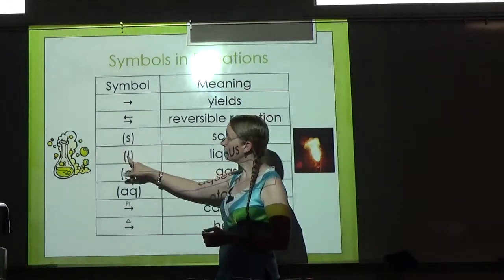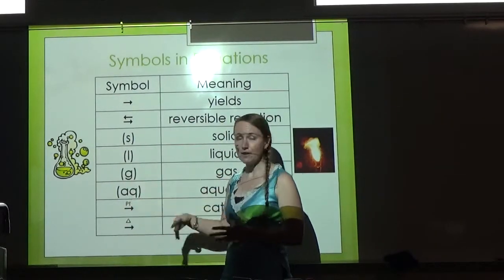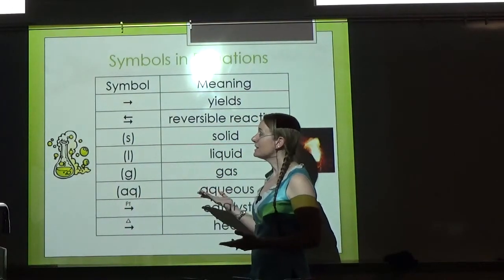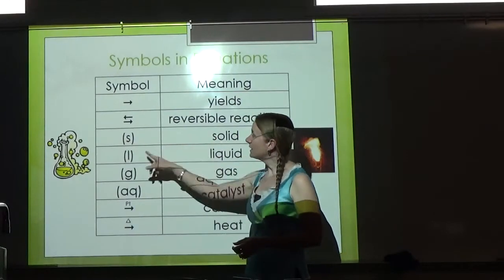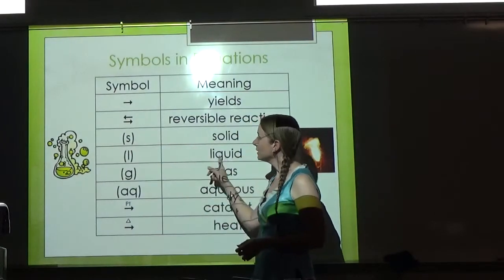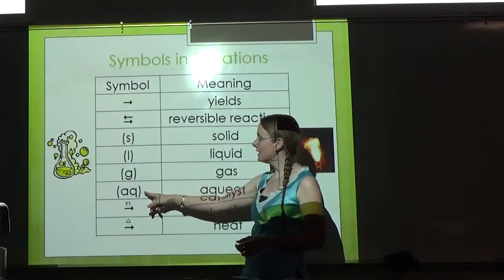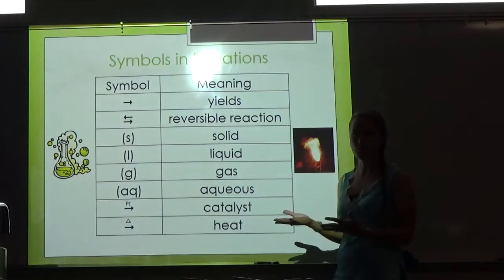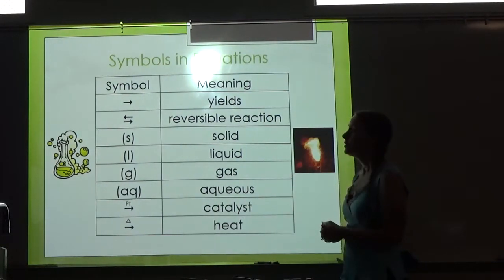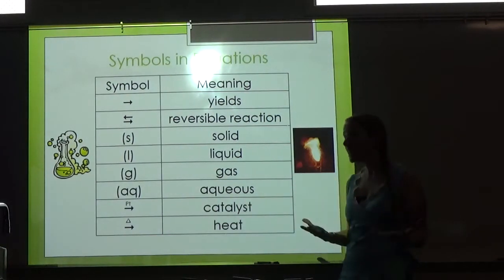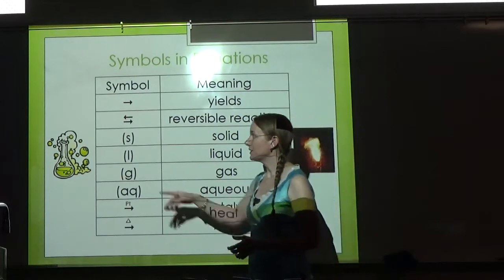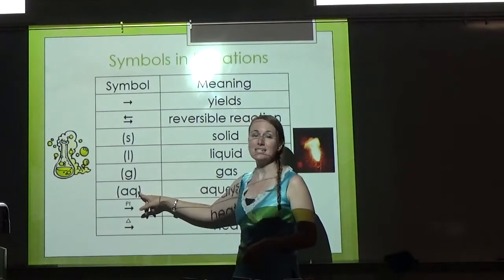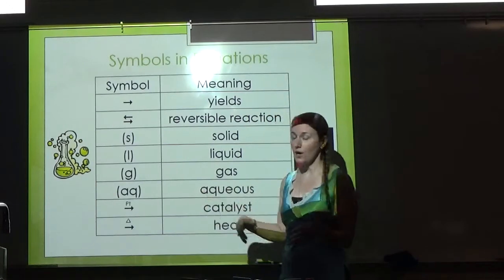Sometimes you'll see little letters after a substance, and those indicate the state of matter. S means solid, L means liquid, G means gas, and AQ means aqueous. Aqueous just means it's dissolved in water. So there's a difference if I start with solid NaCl versus NaCl aqueous—that means it's salt in water.